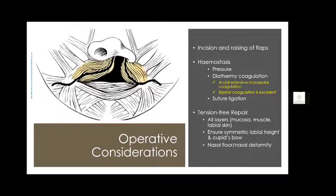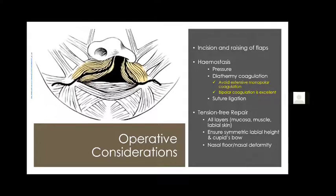While repairing and advancing flaps, ensuring symmetry comes in — this is where all the measurements we have taken come in. We want to ensure that the labial height on the cleft and non-cleft sides and either side of the cupid's bow are the same length. We need to repair the nasal floor. At this stage we don't make any extensive effort to address a severe nasal deformity — I leave that for a later date for secondary surgery. However, minor nasal deformities can be corrected at the time of primary cleft lip repair.